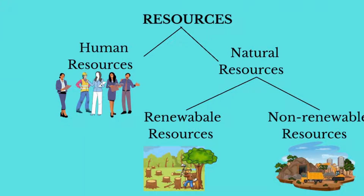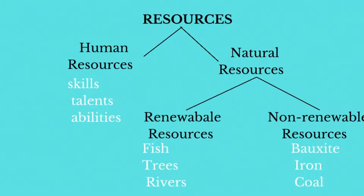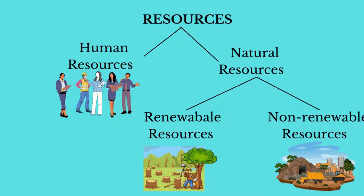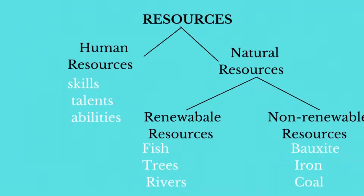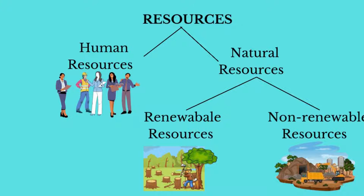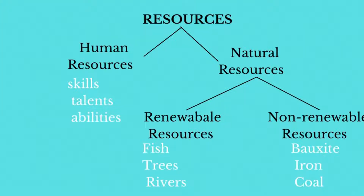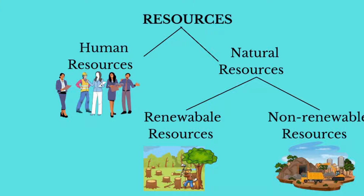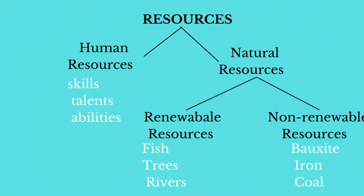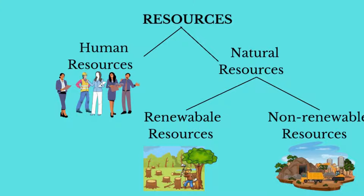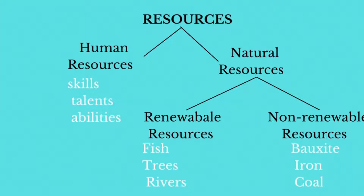Natural resources are features of the environment used by people to satisfy their wants and needs. Natural resources such as crops, fish, trees, and rivers, which are replenished by nature as fast or faster than they are used up, are called renewable resources.